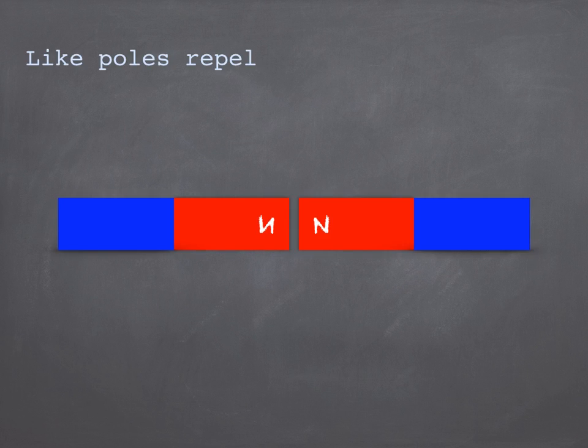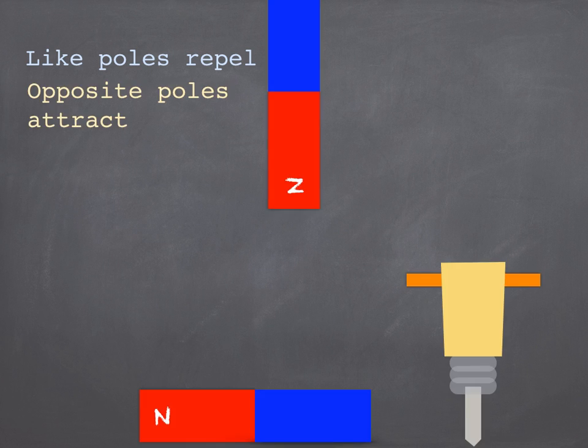Magnets will exert a force on other magnets. Like poles repel each other. So two norths will repel or push each other apart. And to coin a phrase opposites attract. So opposite poles, our north pole and our south pole here, will attract each other and they'll be pulled together.